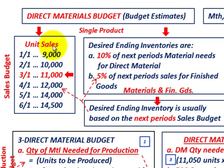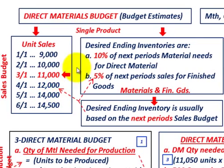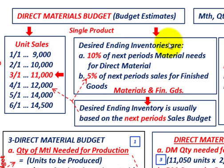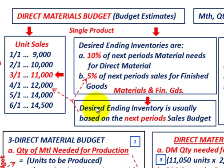First, determine unit sales from the sales budget. For our example, March has unit sales of 11,000. We also need April and May figures: April has 12,000 units and May has 14,000 units to be produced. We need to determine desired inventories for both materials and finished goods. For materials, ending inventory is based on 10% of the next period's material needs. For finished goods, it's based on 5% of the next period's sales.